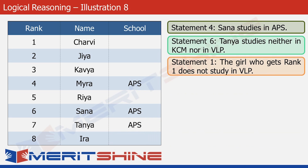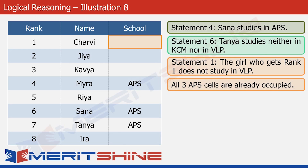The next statement is statement 1. It says the girl who gets rank 1 does not study in VLP. We were told in the problem that exactly three of the eight girls study in APS, and all three APS slots have already been filled at ranks 4, 6, and 7. So all three APS cells are occupied. Since rank 1 does not study in VLP, the only option left is KCM. So let's fill that cell with KCM.